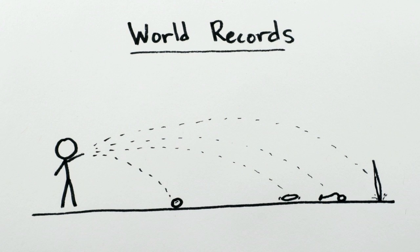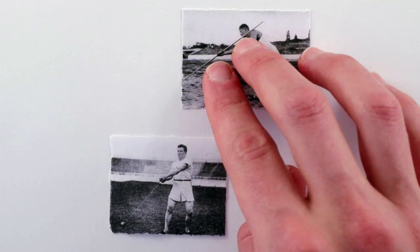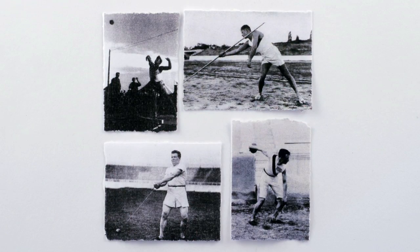It still has the longest world record, but the javelin is considerably lighter than the other implements, so which one - the hammer, javelin, discus, or shot - gets thrown with the most energy?